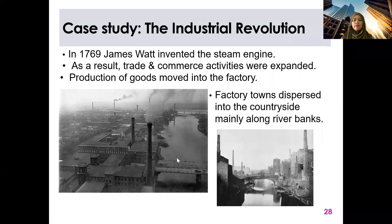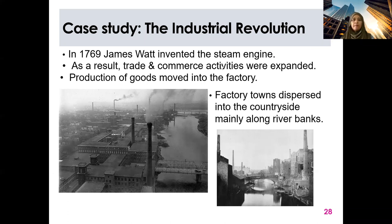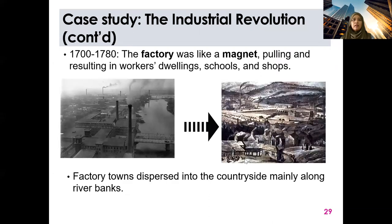Towns and cities that boomed during the Industrial Revolution in the UK must be near a water body — along a river or the seaside — because of the transportation of raw materials and fuel. From 1700 to 1780, the factory was like a magnet, resulting in workers' dwellings, schools, and shops clustering around it. People from rural areas, who were working for rich landlords and paid very poorly, felt a sense of hope that coming to the city could earn them more money and a better life for their family.